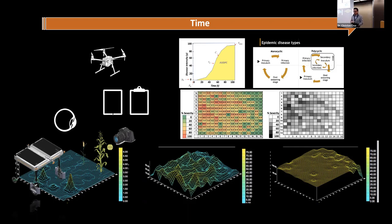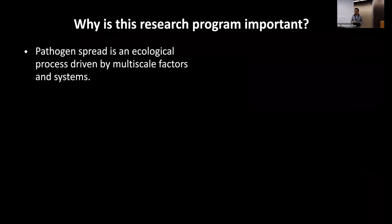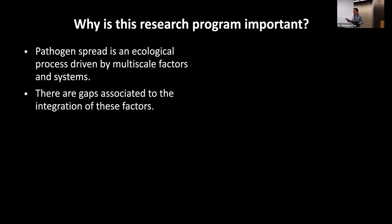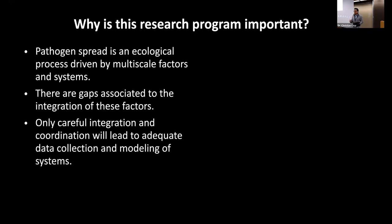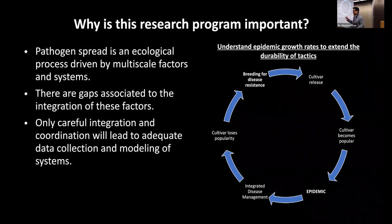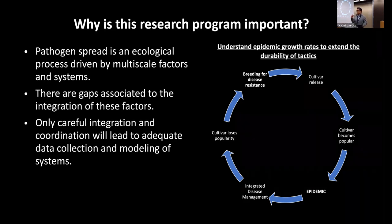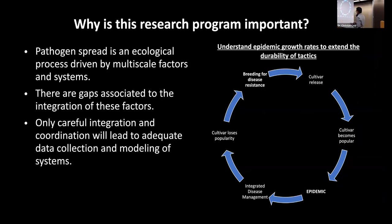The idea is that we're moving towards those levels of technologies. We know that pathogenic spread is an ecological process driven by multiple factors and systems that are very complex. We are in need of careful integration of scientific fields and engineering fields to move that forward. From a practical standpoint: if we don't understand epidemic growth rates, it's going to be difficult to extend the durability of the tactics that we're currently using — one of those tactics being cultivars that possess different levels of resistance.